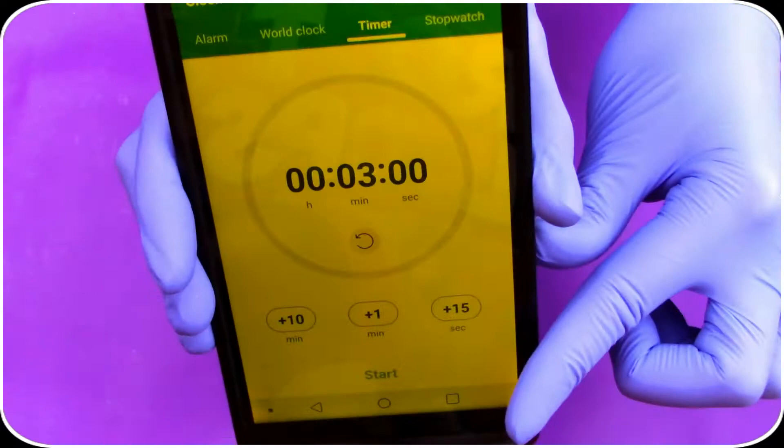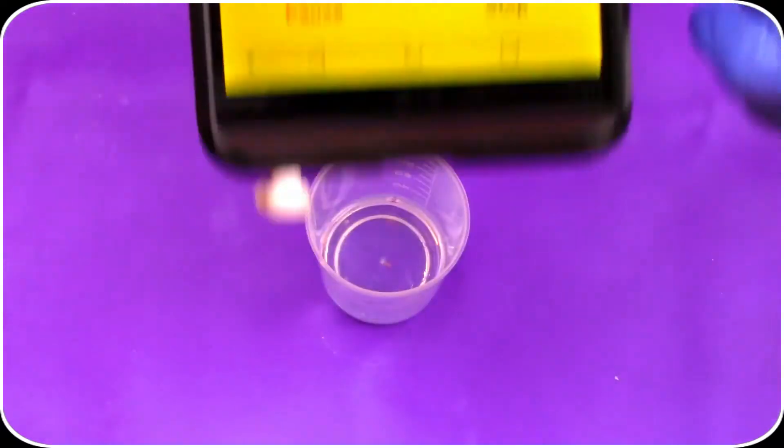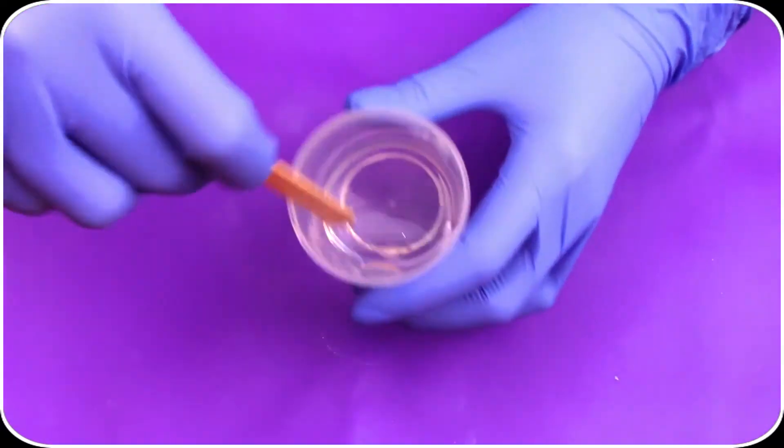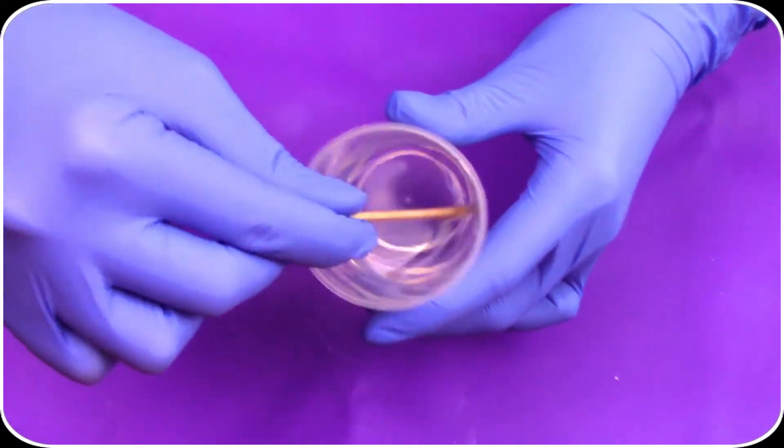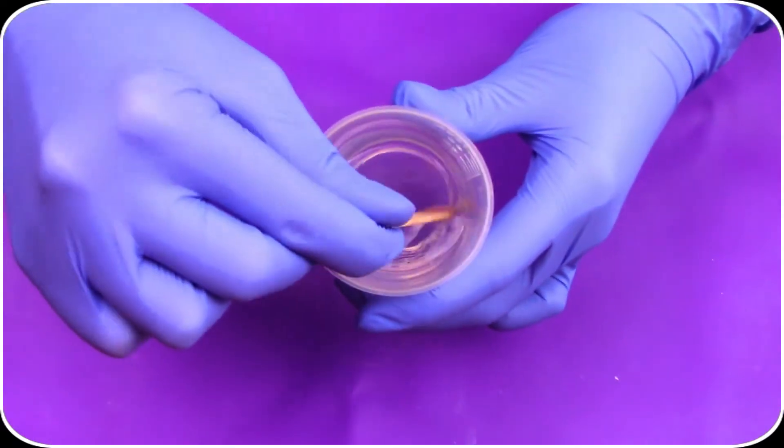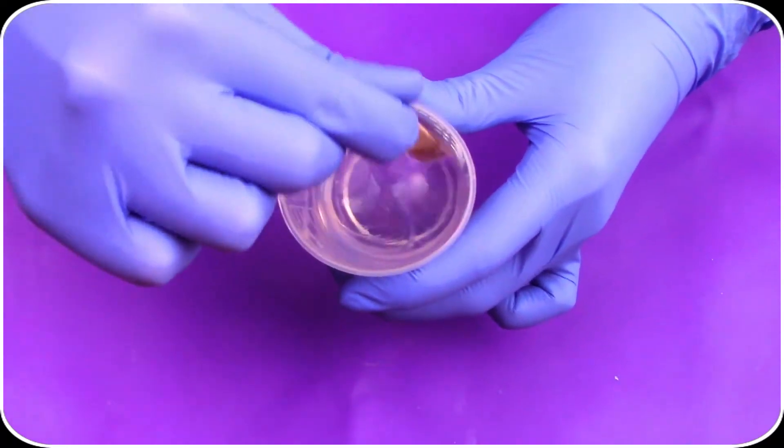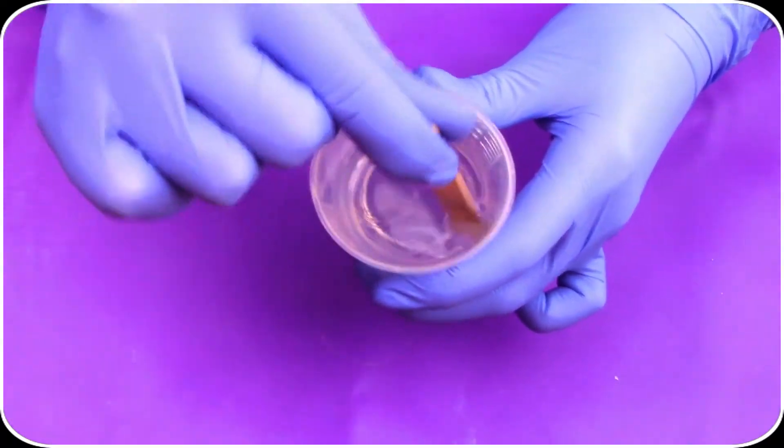Now grab your 3 minute timer and press start. When you mix this for the 3 minutes, make sure to do so slowly, scraping the sides and the bottom so everything gets fully integrated. Now we mix slowly just so we can avoid any excess bubbles from popping up.